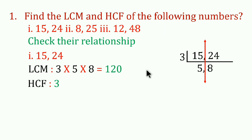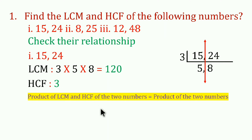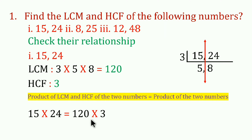Now let's check the relationship between LCM and HCF. The product of LCM and HCF of two numbers is equal to the product of the two numbers. So, 15 × 24 = 360, and LCM × HCF = 120 × 3 = 360. This confirms the formula.